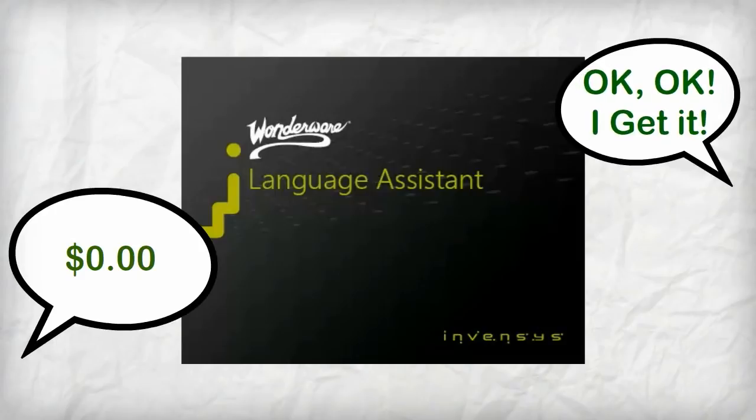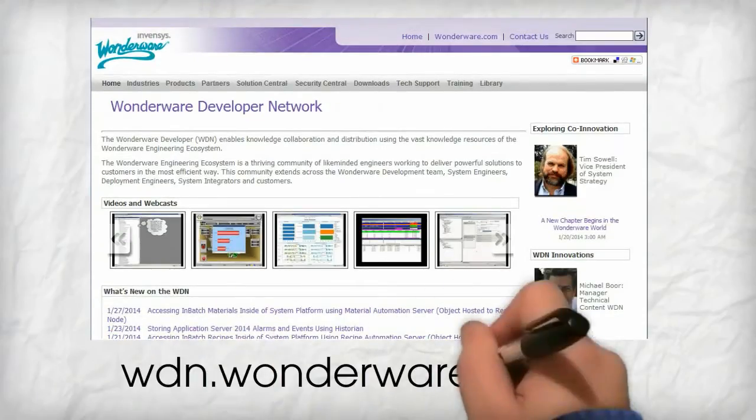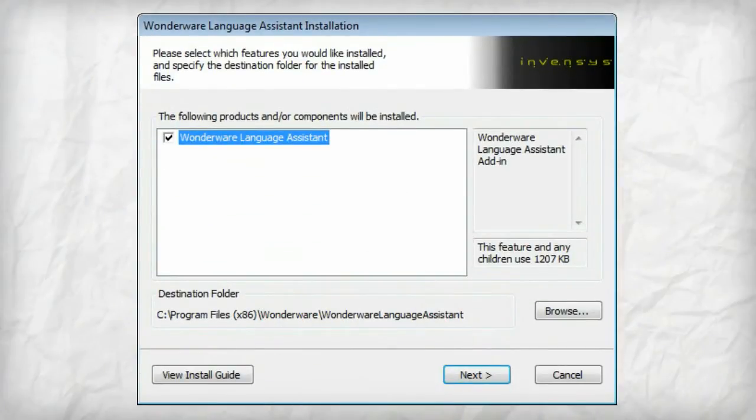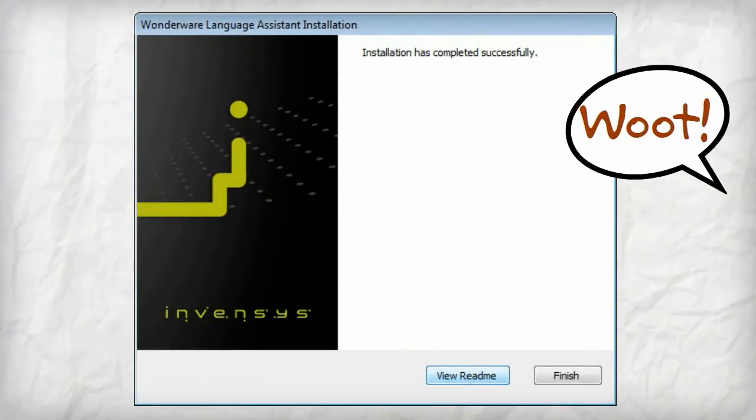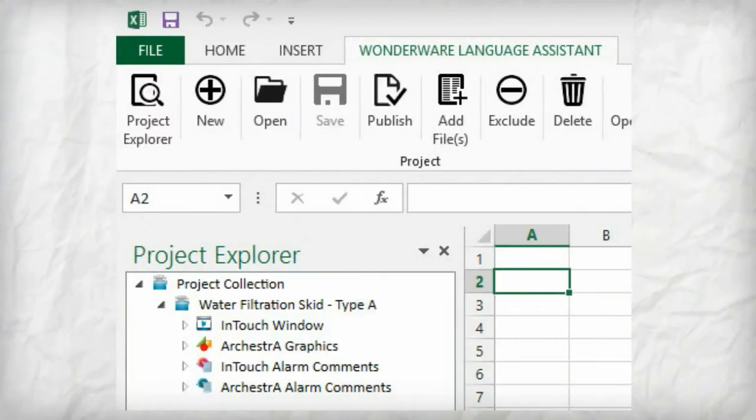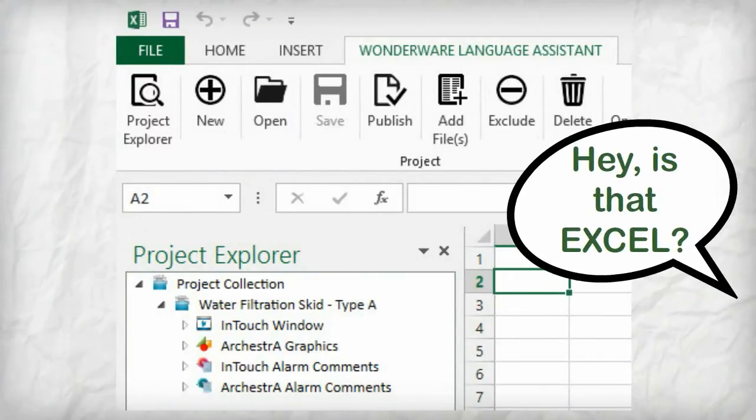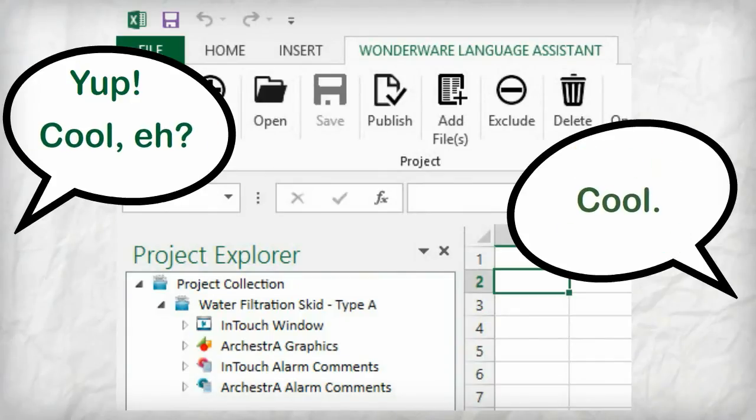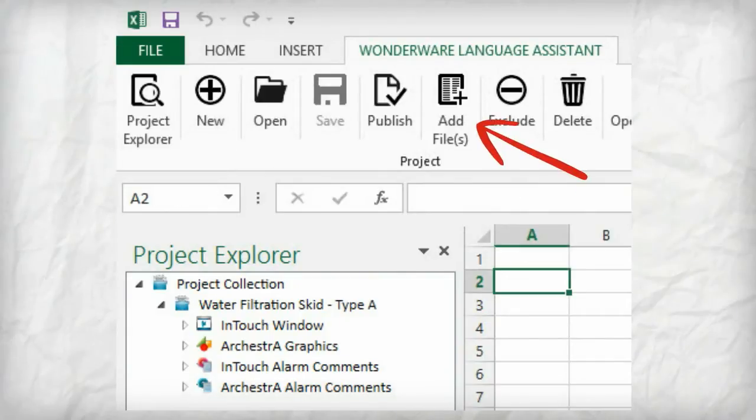How? It's simple. Head on over to the Wonderware Developers Network. Then, download and install the Wonderware Language Assistant Excel Add-in. Next, create a project in the Language Assistant. Then, load up your content, and voila, you're ready to start translating.